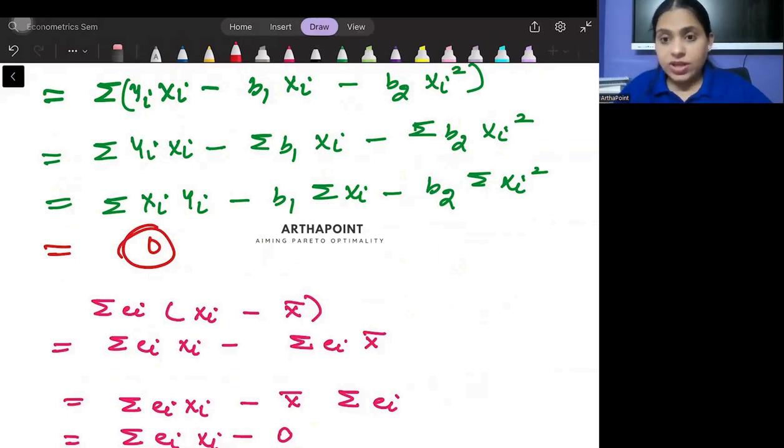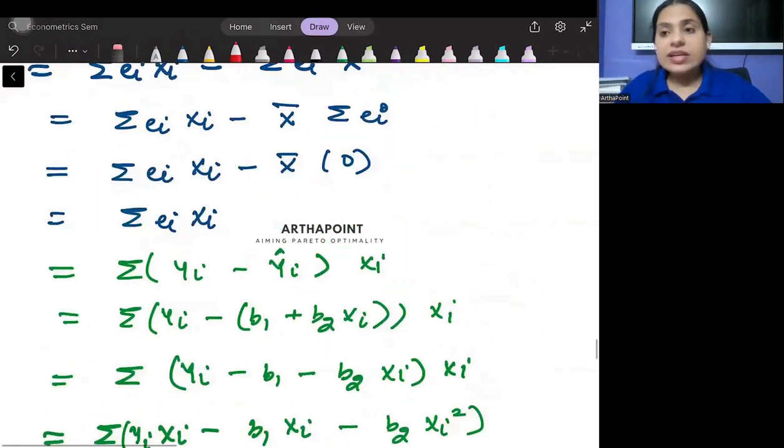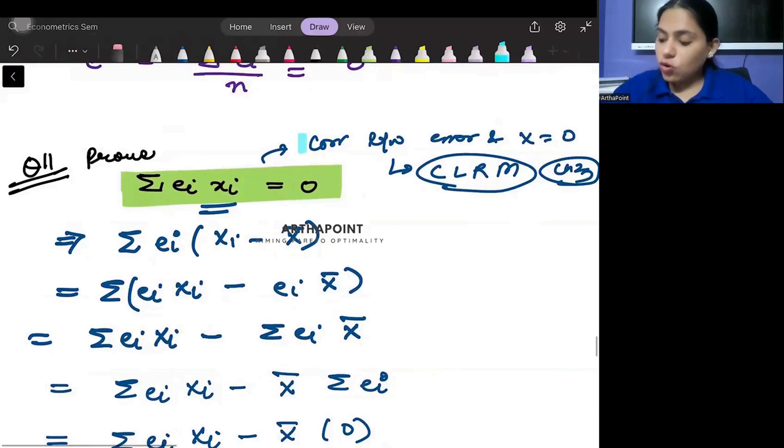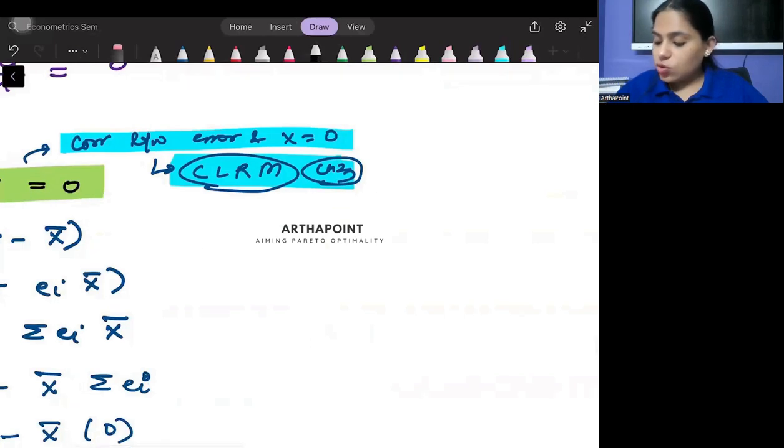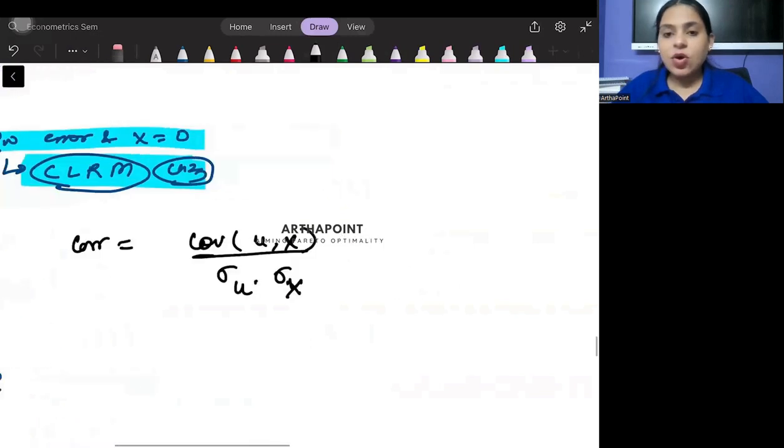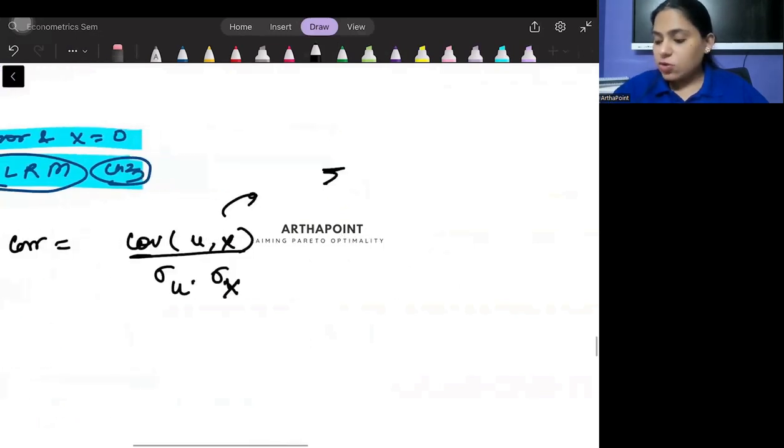So in terms of language, as I've already told you, it means that the correlation between error and X's is 0. Covariance, correlation—the numerator means covariance happens here.